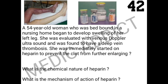The last spot is also a case-solving question. A 54-year-old woman who was bed-bound in a nursing home developed swelling on her left leg. She was evaluated with venous Doppler ultrasound and found to have deep vein thrombosis (DVT). She was immediately started on heparin to prevent the clot from further enlarging. The question asks: what is the chemical nature of heparin and what is its mechanism of action?